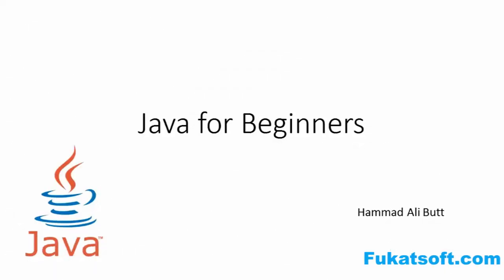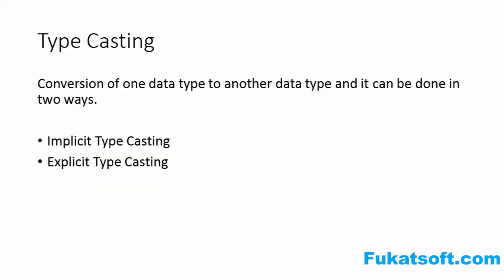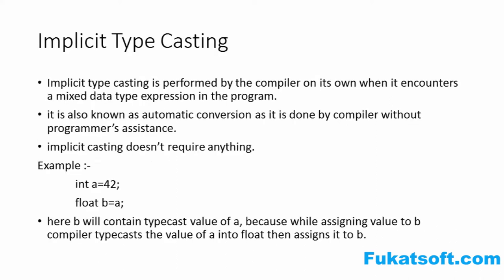My name is Hamadli and today's course of Java for beginners is Type Casting. Type Casting is when we convert one data type to another data type. Basically, Type Casting is of two types: Implicit Type Casting or Explicit Type Casting.